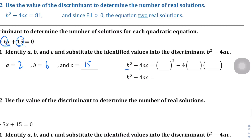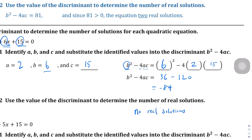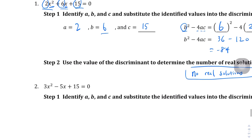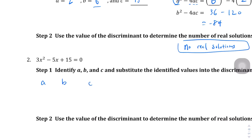Now we plug into the discriminant formula: b squared minus 4ac. b was 6, so 6 squared minus 4 times 2 times 15. That's 36 minus 120, which gives us negative 84. Since the discriminant is negative — less than zero — there are no real solutions.